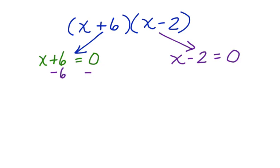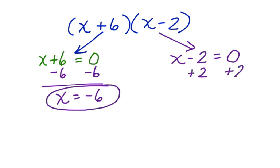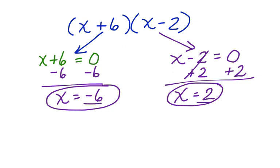We subtract 6 from both sides and we have x equals negative 6. And we add 2 to both sides here and we have x equals 2. The x-intercepts are negative 6 and 2.